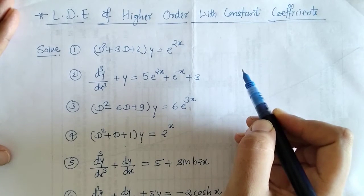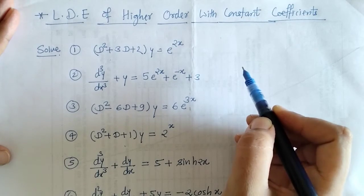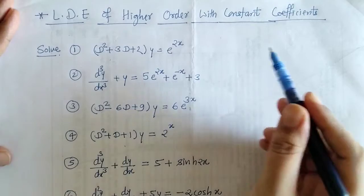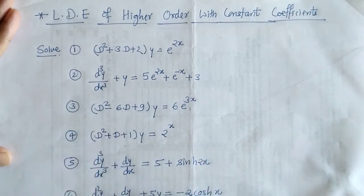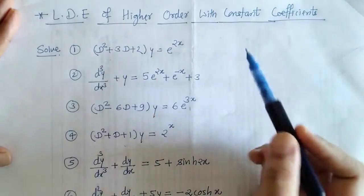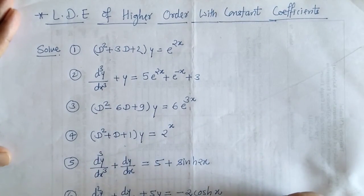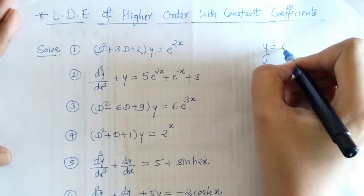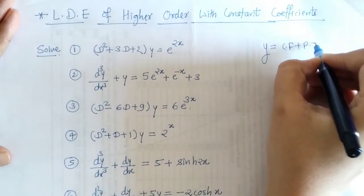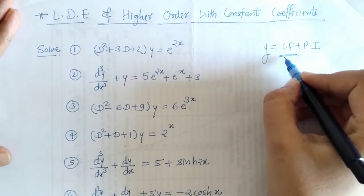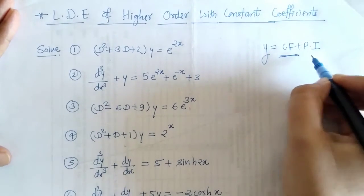Hello everyone, welcome to Unlock Maths. Today we are going to solve linear differential equations of higher order with constant coefficients. We know that we can find the solution by y = CF + PI. In the last lecture we saw how to find CF. Now, in this lecture we will see how to find the PI.